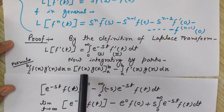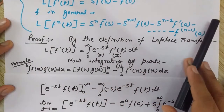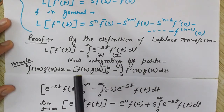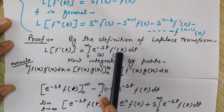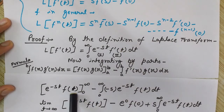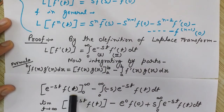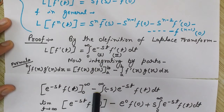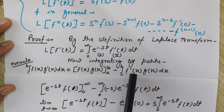First, write the first function as it is: e^(−st). The integration of the second function — the second function is f'(t) — its integration with respect to t would be f(t), since it is already a differential. So its integration is f(t), with limits 0 to infinity.